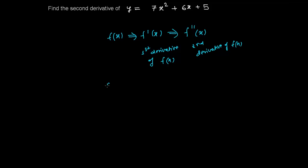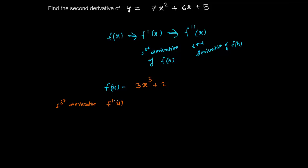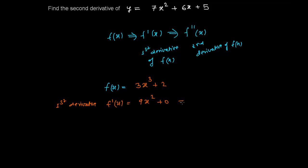Suppose you have a function f(x). I'm just taking a very simple example. Suppose it is 3x³ + 2. So your first derivative, which we write as f'(x), is simply 9x² — because 3 times 3 is 9, and the derivative of the constant 2 is 0. So the first derivative is 9x².